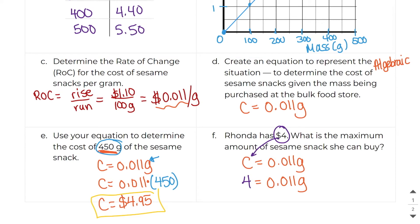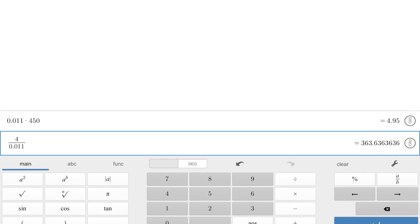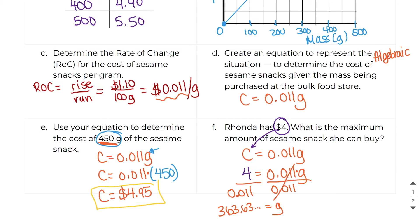To solve for G, I have to get rid of that multiplication. And the opposite of multiplication is division. And whatever I do to one side, I do to the other side. So I have to divide 4 by 0.011. And I end up getting 363.6363, so on and so forth. So we can say, therefore, Rhonda can buy a maximum of 363 grams of her snack.